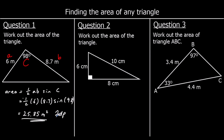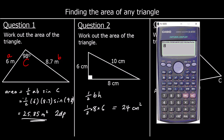Question two. We could use half AB sine C with the 90-degree angle as our C, but we can just use half base times height. So half times 8 times 6: half of 8 is 4, times 6 is 24 centimeters squared. If you had used half AB sine C, that would be half times 6 times 8 sine 90. Sine 90 equals 1, so it's actually the same calculation — half times 8 times 6 times 1.